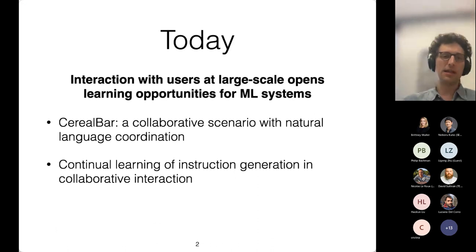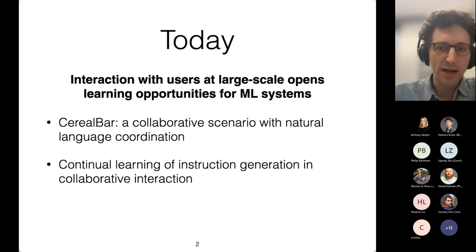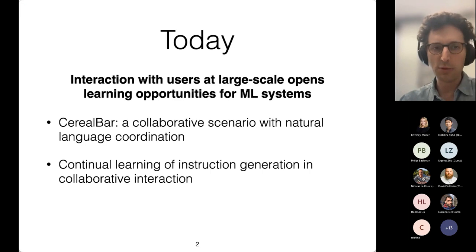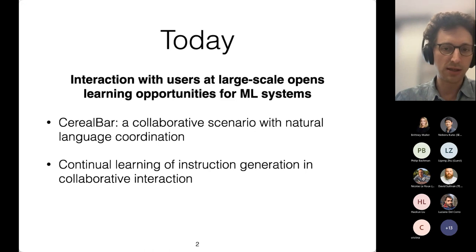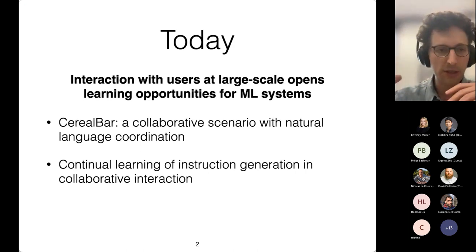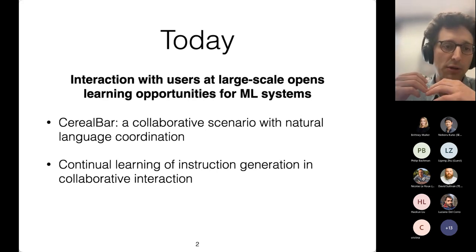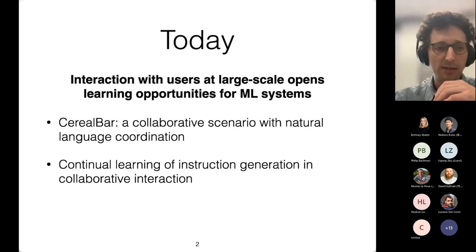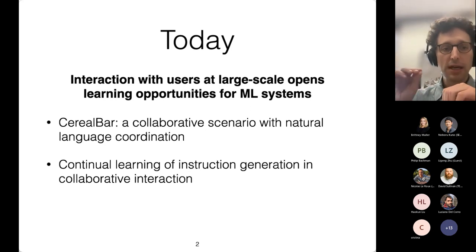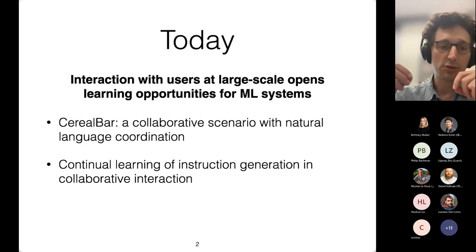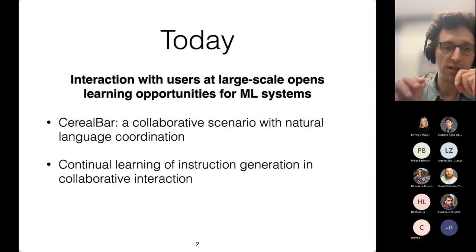The goal I'm going to describe today is studying learning opportunities that arise when systems interact with users. This is an important aspect of deployment at scale. The talk will be divided into two major parts. In the first part, I'll describe in abstract terms the kind of scenarios we're interested in and instantiate those in a game-like environment called Serial Bar, which is a collaborative scenario with natural language coordination. In the second part, I will use Serial Bar to study continual learning with a focus on instruction generation in this kind of collaboration.